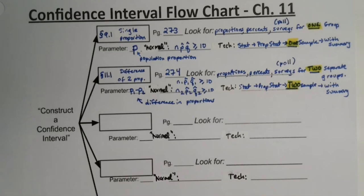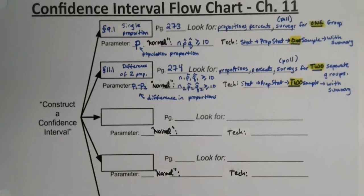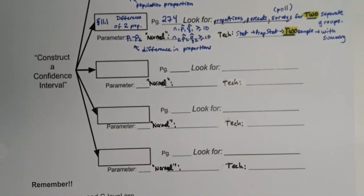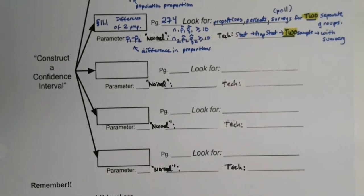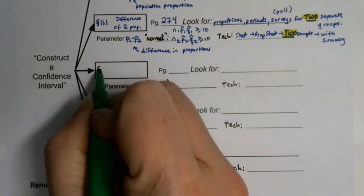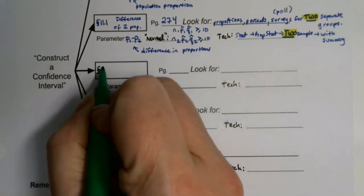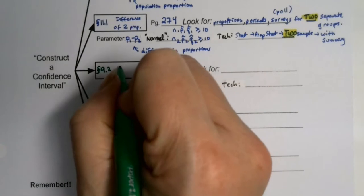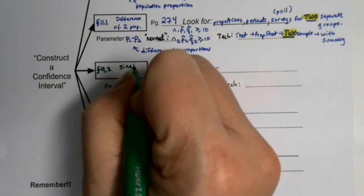Now we have the mean-based confidence intervals. The bottom three confidence intervals all deal with the mean to varying degrees. The first one we learned was in section 9.2, and it's for a single mean.